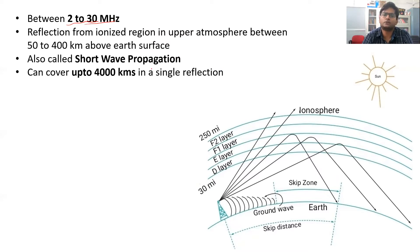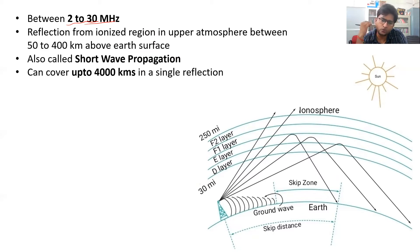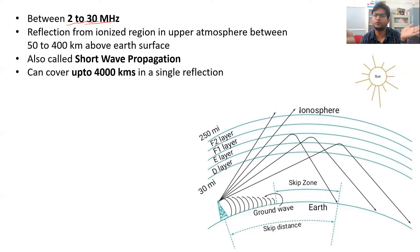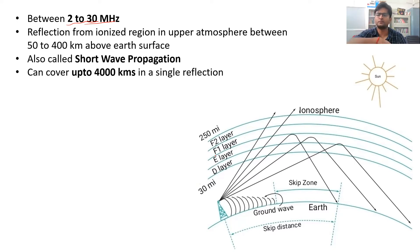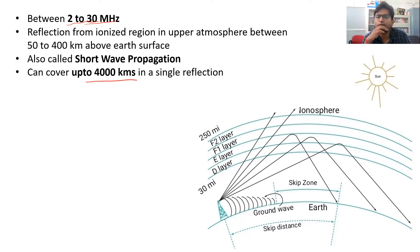This particular frequency range is also called the short wave frequency range. There is a short wave radio through which you can get radio signals from very distant countries. Because of this reflecting phenomenon from the ionosphere, the wave travels very large distances. Even for just a single hop — meaning the signal goes to the ionosphere and comes back to earth — it can travel up to 4000 kilometers.